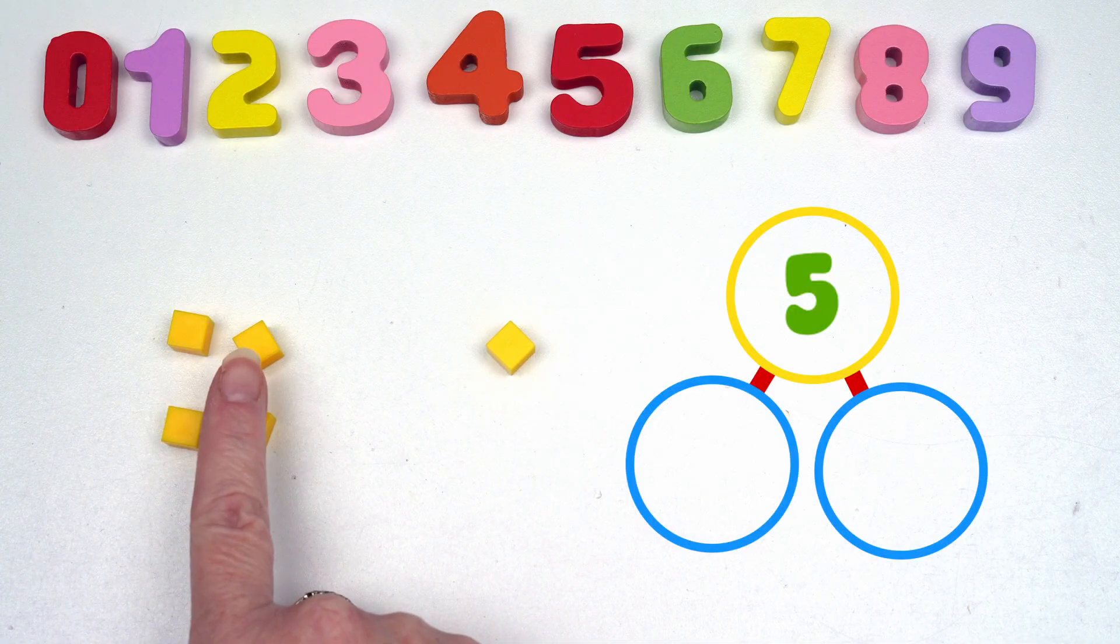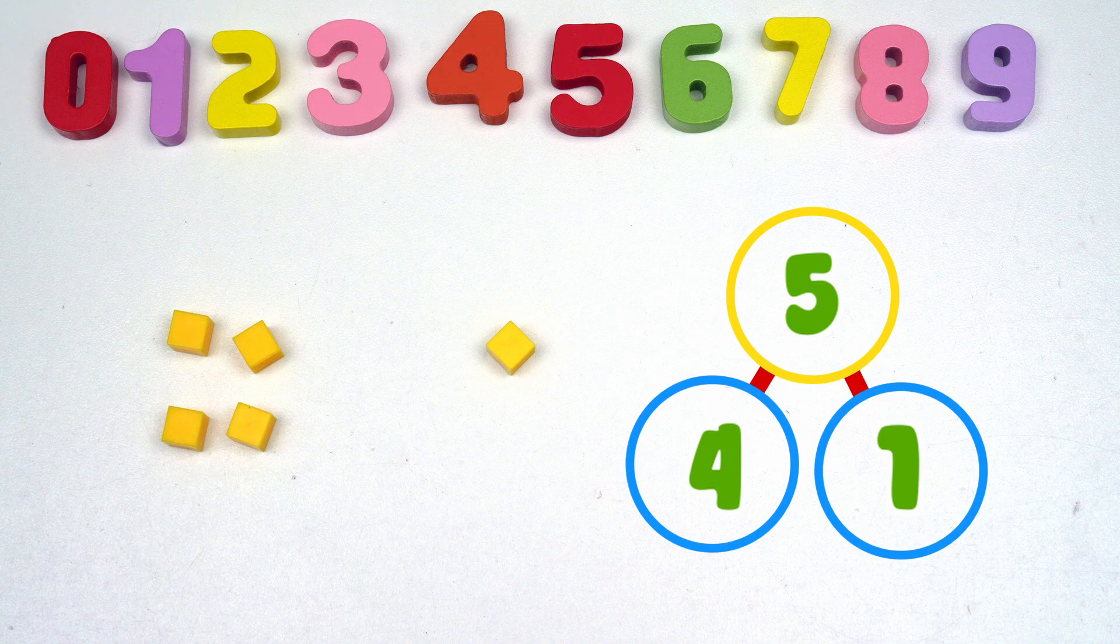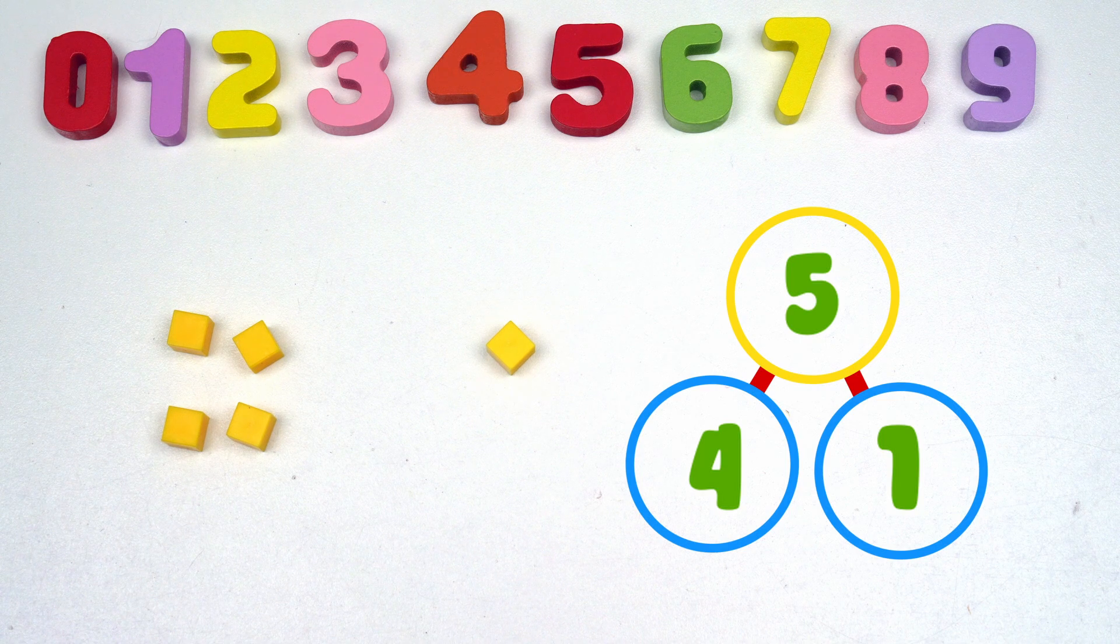Or we could have one, two, three, four, five. Four and one would make a number bond for five.